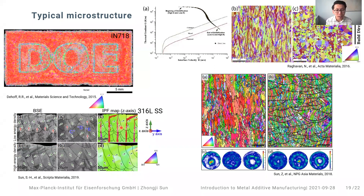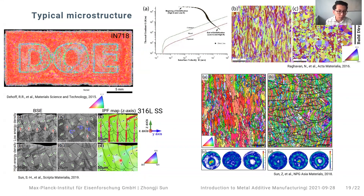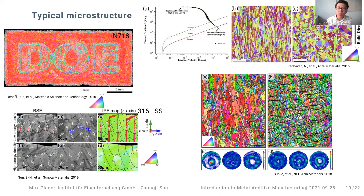By knowing these parameters, they put them into columnar-to-equiaxed transition maps and successfully designed different types of grain morphologies in their EBM-built nickel superalloy samples. They subsequently published another paper achieving a layer of columnar grains followed by a layer of equiaxed grains. For stainless steel, a group in Osaka, Japan, produced interesting layer-wise microstructures: in the center of the melt pool they found a [001] texture, while between melt pool centers they saw [011] texture. This sample was claimed to have superior corrosion resistance compared to samples with a common texture.